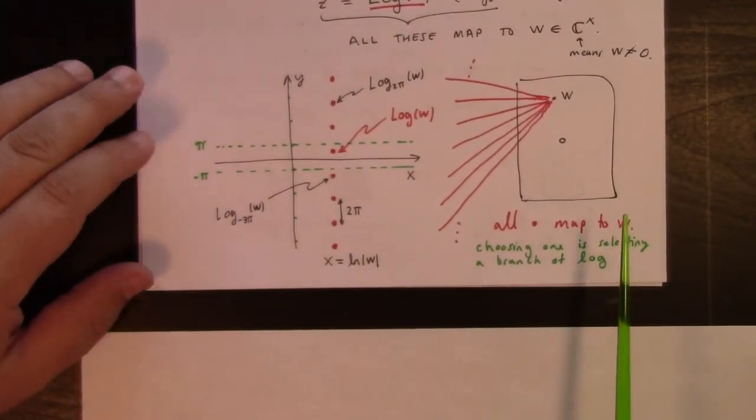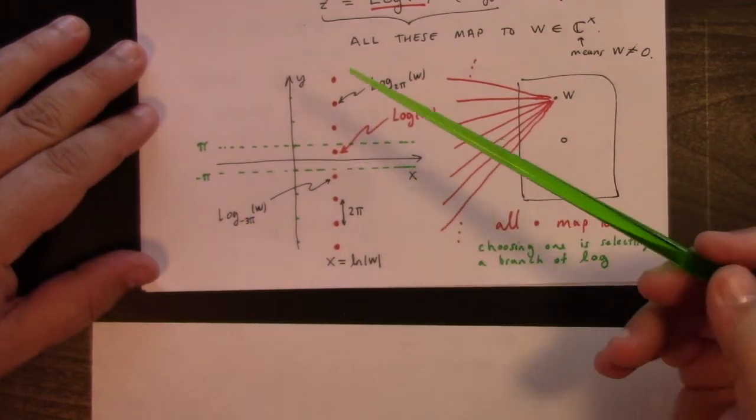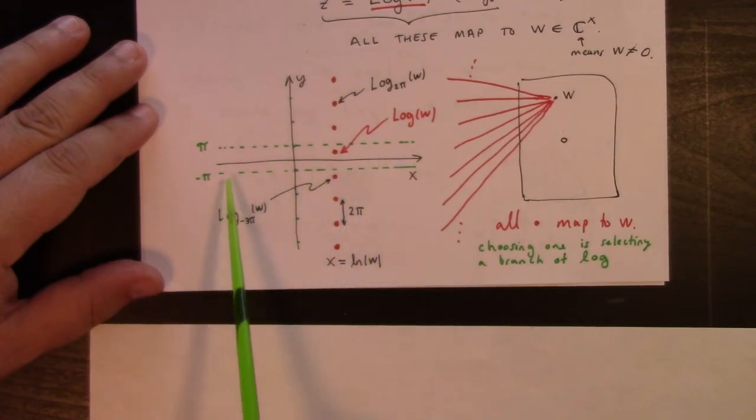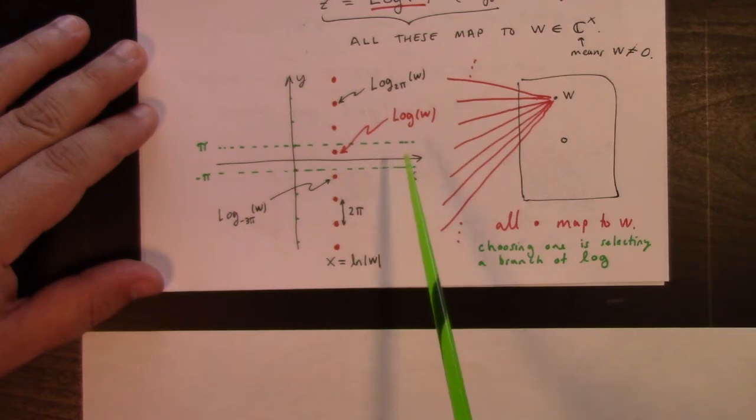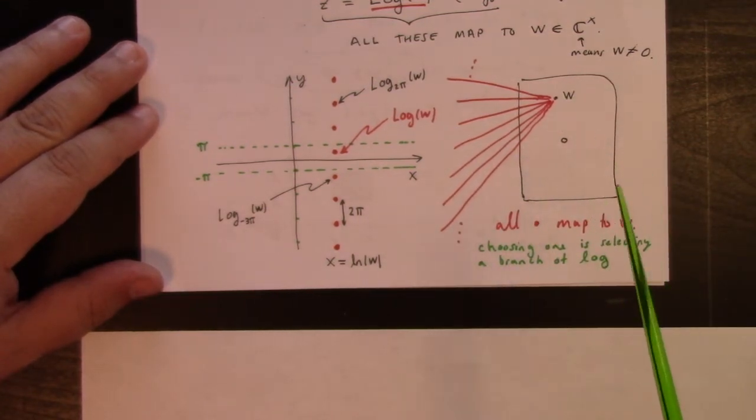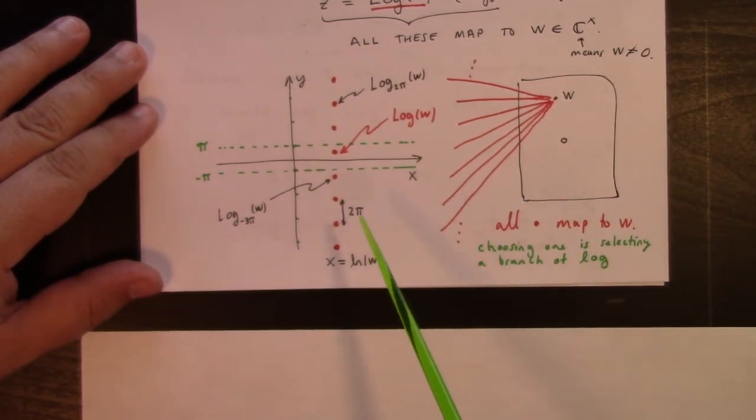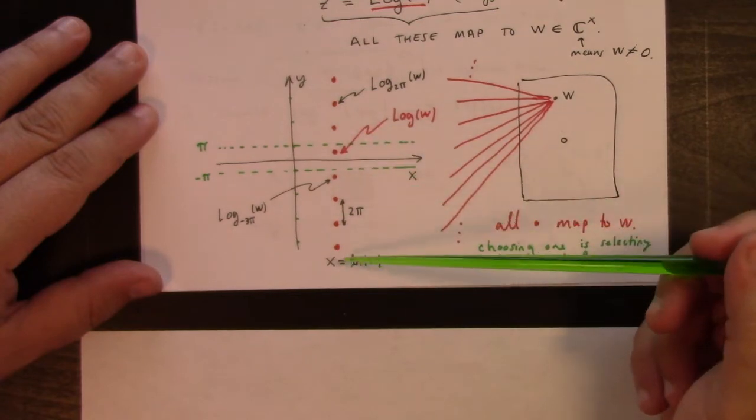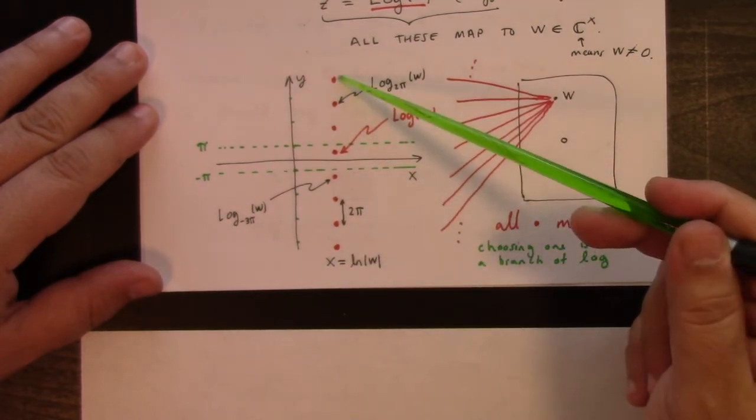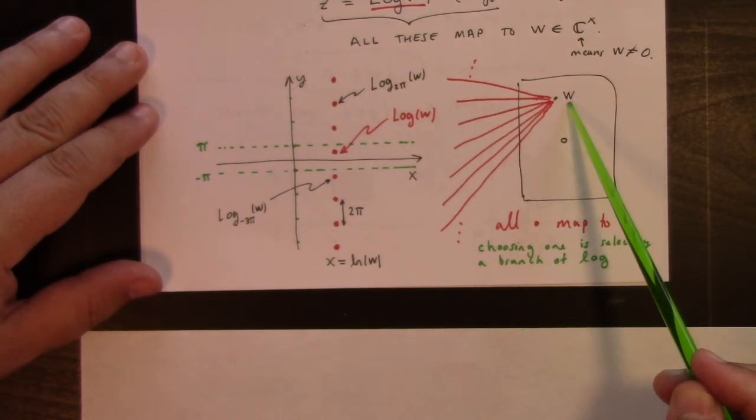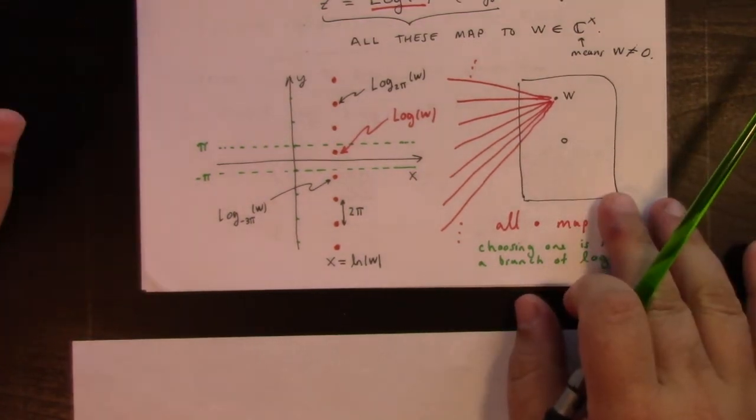Here's a picture of what's going on. In the complex plane z, we have this infinite string of points, each one of these separated by 2 pi in the imaginary direction. I've drawn these two green dotted lines, minus pi and pi, to illustrate possible standard angles for the principal argument. This is log 2 pi of w. This would be the log of w somewhere between minus pi and pi in terms of the y value. All of these have the same x value. They're all x equals to the natural log of w. But this whole infinite tower of points separated each by 2 pi, this discrete spectrum of points, all of those map to the same w in the complex plane. Choosing one of these is selecting a branch of the logarithm. Logarithm is multiply valued.